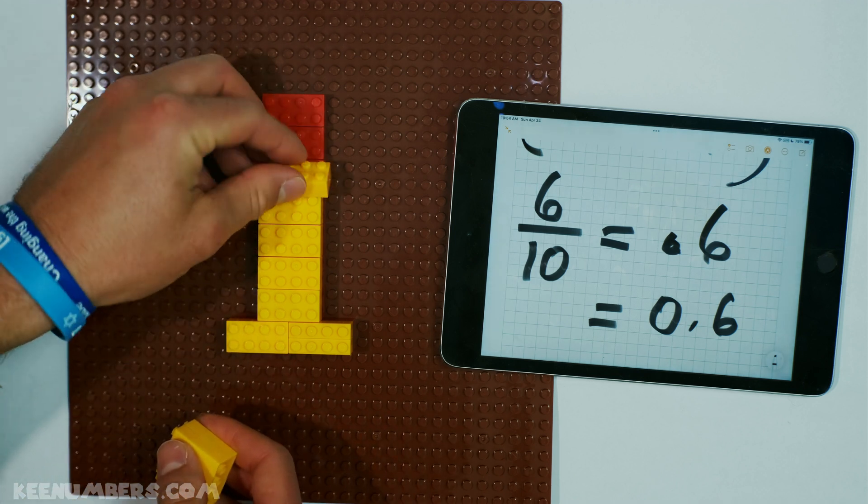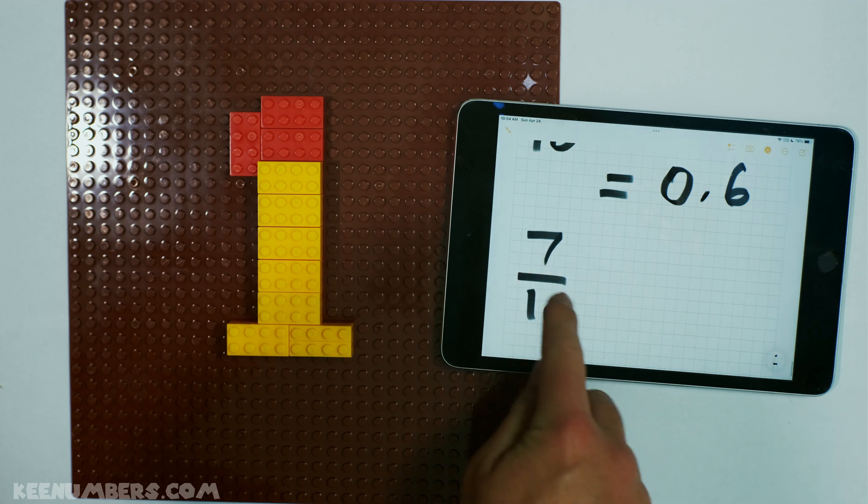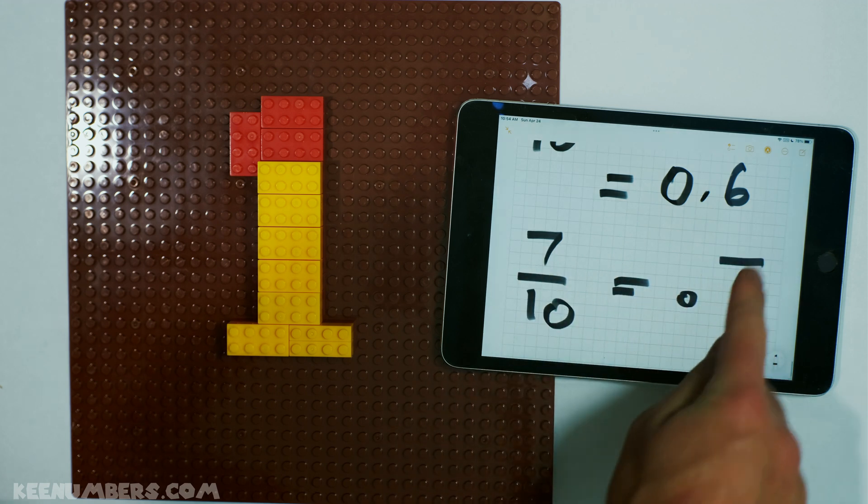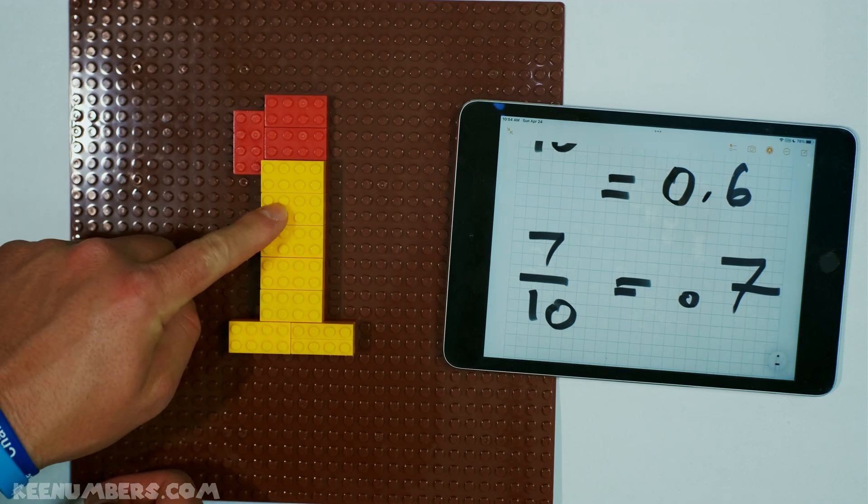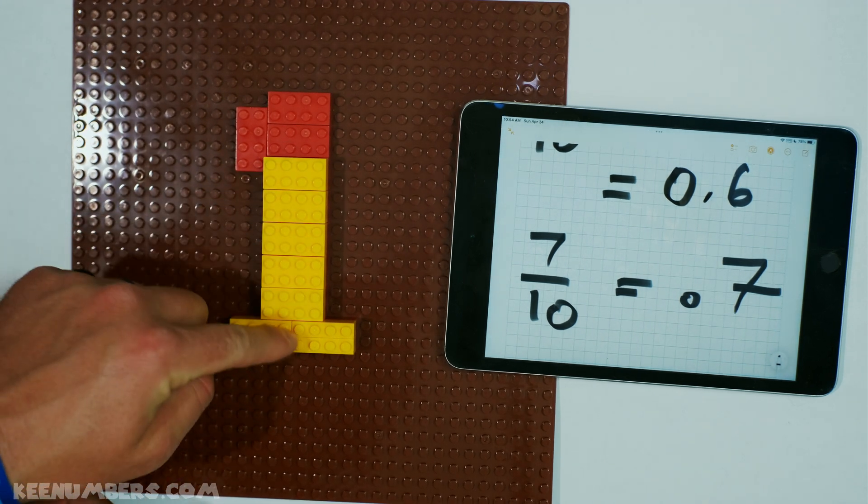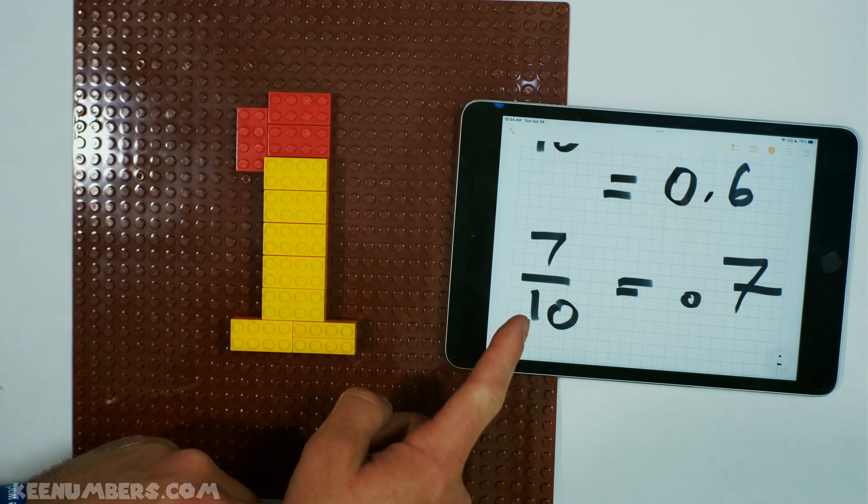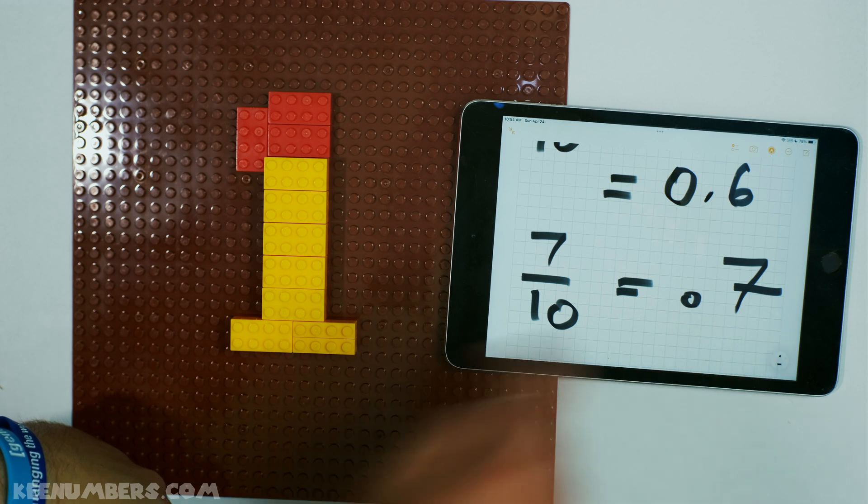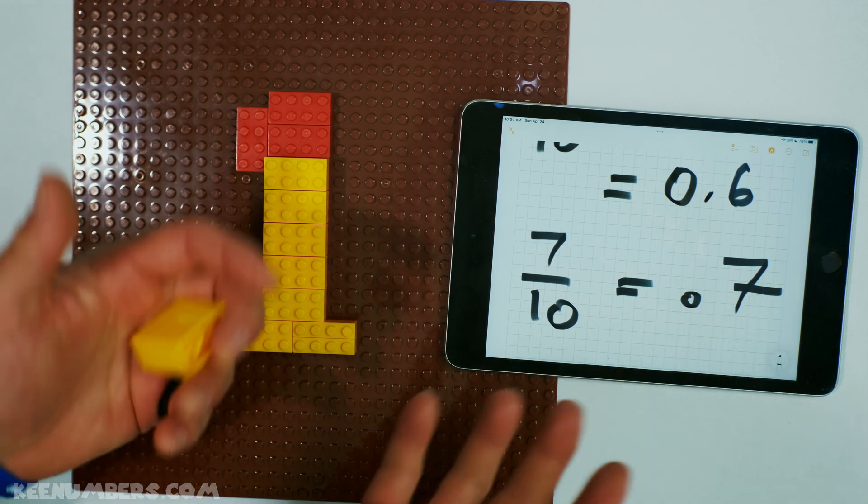6 tenths. Now, we are nearly there. We have 7 tenths. And if you are just now joining us, you can double check. 1, 2, 3, 4, 5, 6, 7. We have 7 equal bricks here making up 1 whole. We will say that 7 of these 10 that make up the whole can be written like so: 0.7. That means decimal.